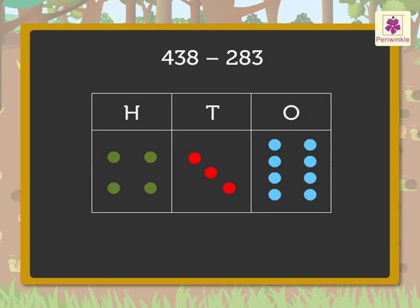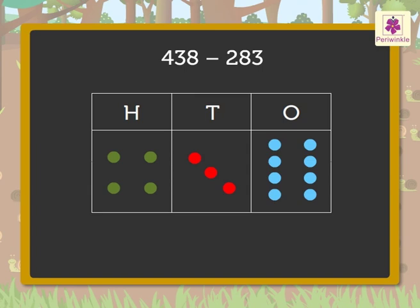Let us represent each hundred with a green dot, each ten with a red dot, and each one with a blue dot. The number four hundred thirty-eight will be represented like this with dots. Now let us cancel the dots equal to the digits in the subtrahend in each column, starting with the ones column first, then the tens column, and lastly the hundreds column. But look — there are only three dots in the tens column and we need to cancel eight red dots.